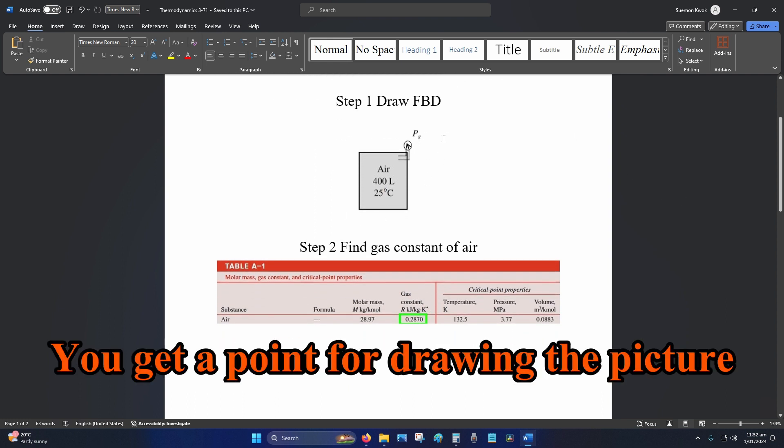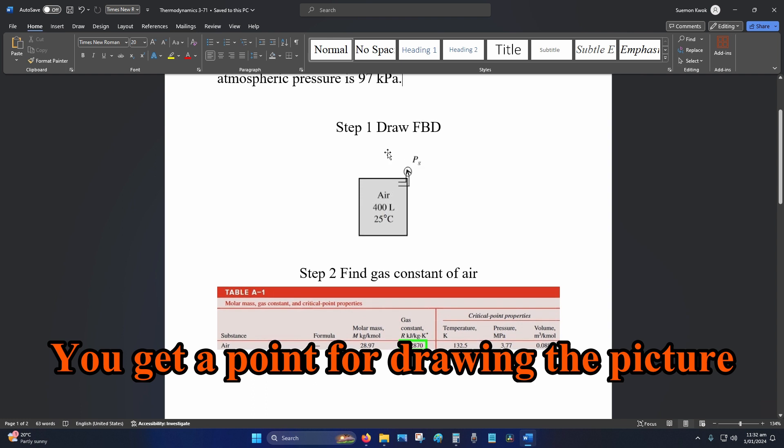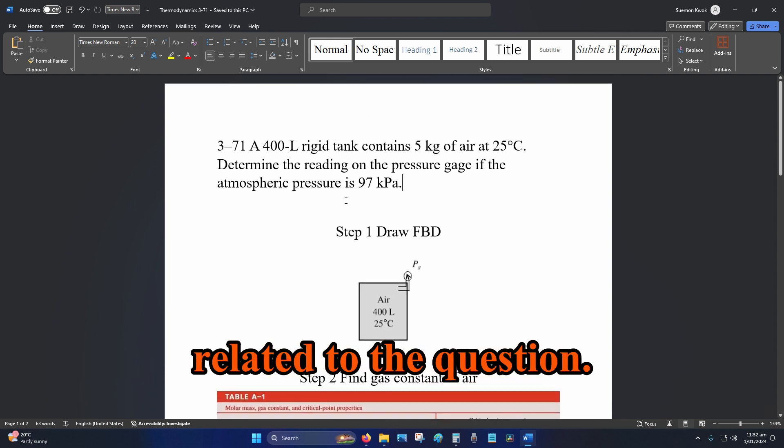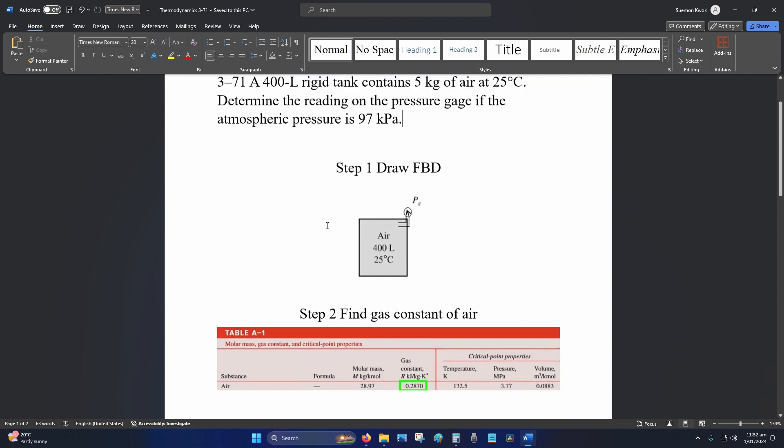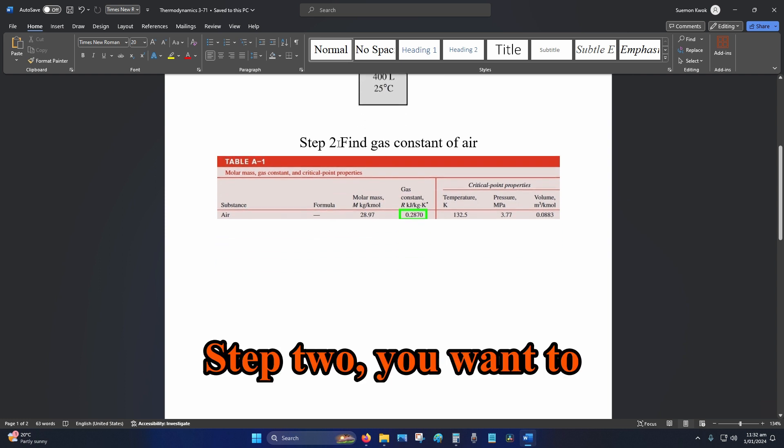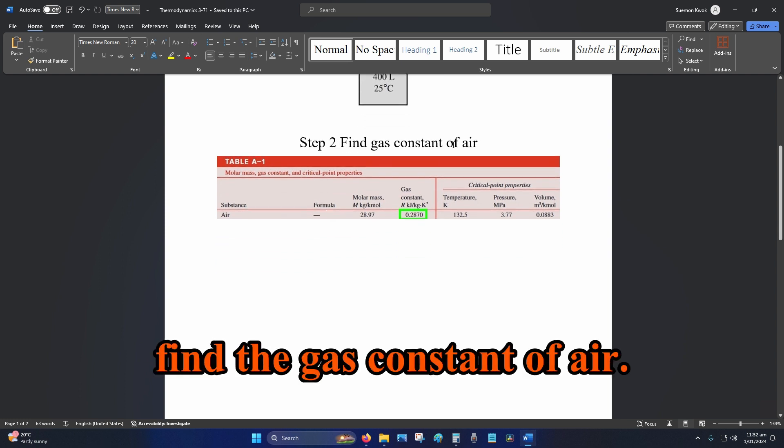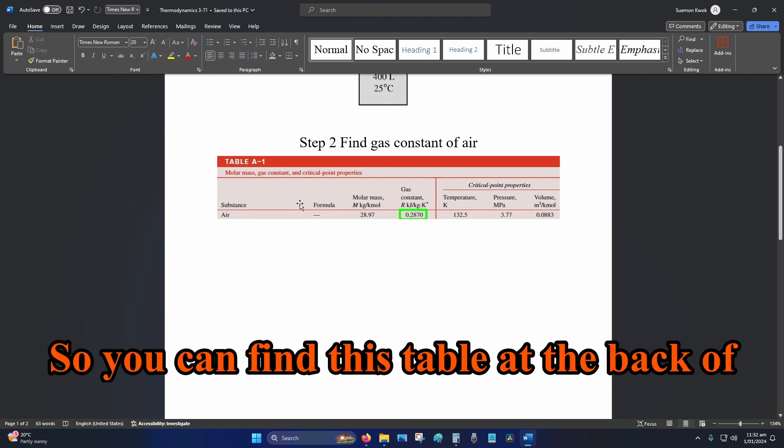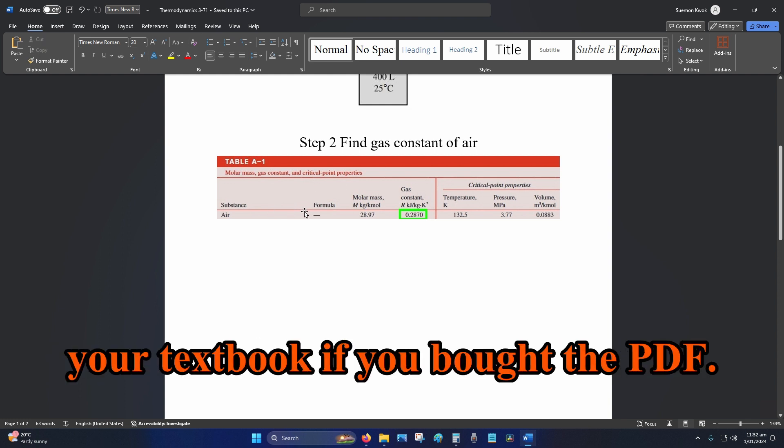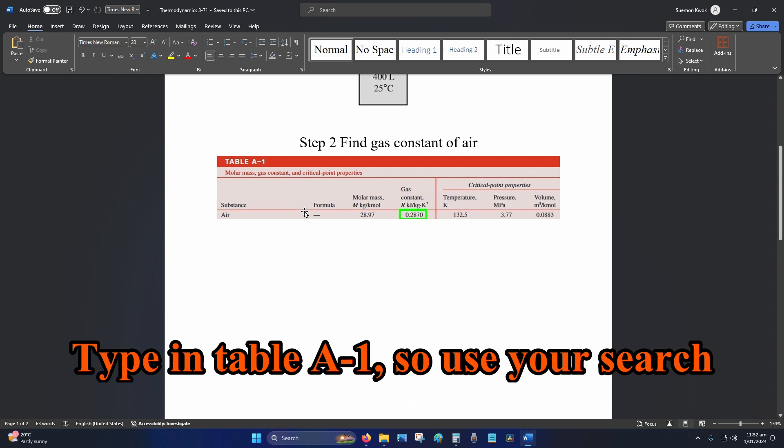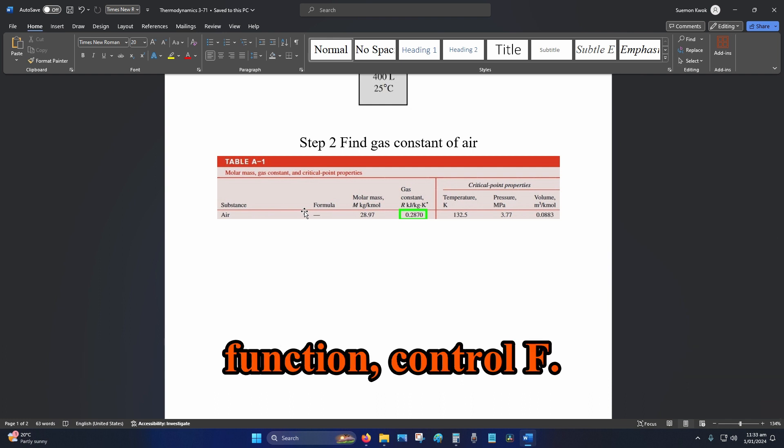You get a point for drawing the picture related to the question. Step two: you want to find the gas constant of air. So you can find this table at the back of your textbook. If you bought the PDF, type in table A-1, use your search function Ctrl+F.